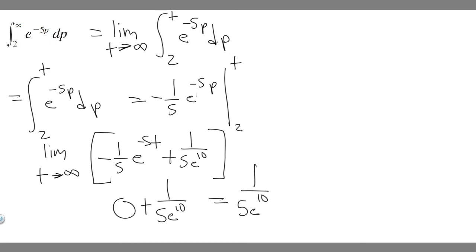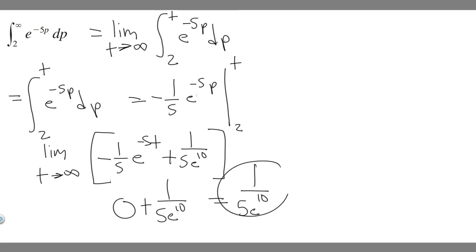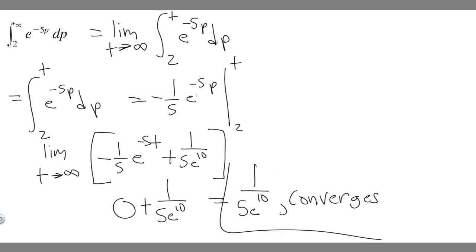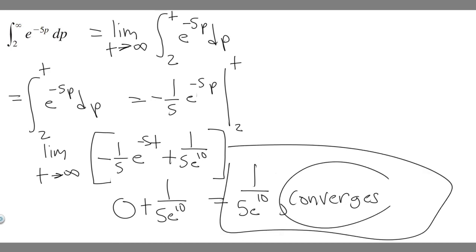Notice that this limit goes to a concrete number — not to infinity or negative infinity. Because the limit exists and is finite, this improper integral converges. So the integral converges to 1 over 5 times e to the 10. That's your answer to this problem — hopefully you found this useful.